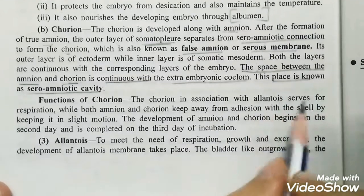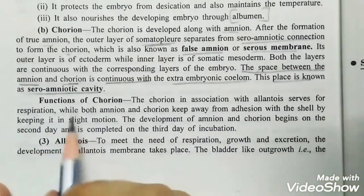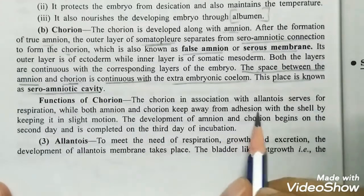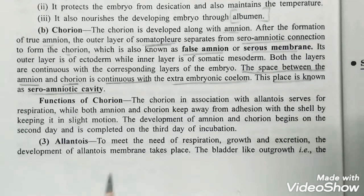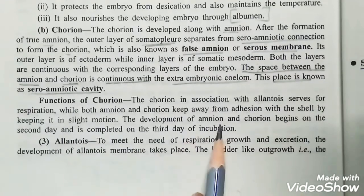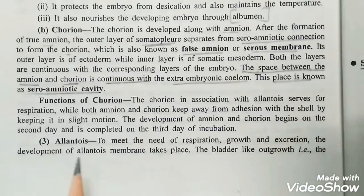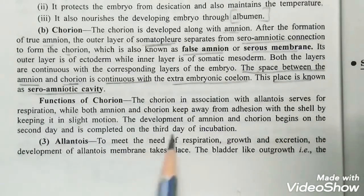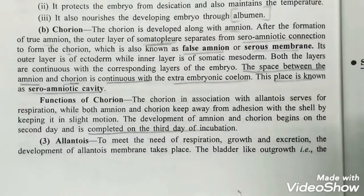The functions of chorion: chorion is in association with allantois and serves in respiration. Amnion and chorion work with the shell by keeping it in slight motion. The development of amnion and chorion begins on the second day and is completed on the third day of incubation.